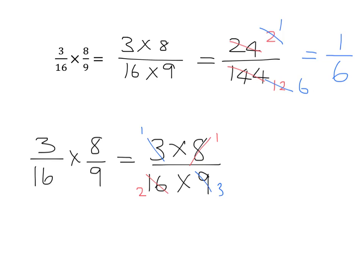Now I can't see anything else I can simplify — nothing I can divide into numerator and denominator. So I can go ahead and get my answer: 1 times 1 at the top, which is 1, and 2 times 3 at the bottom, which is 6. Just doing a little simplifying along the way meant I didn't have to do really big multiplications and then a long, complicated simplification.